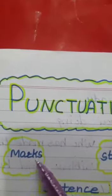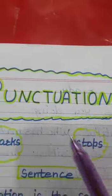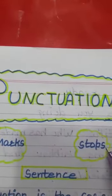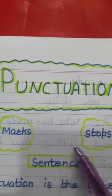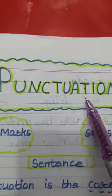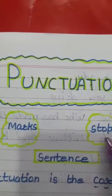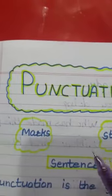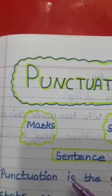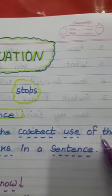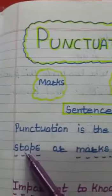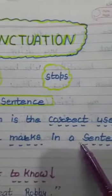What is punctuation? Punctuation is marks or stops. And where do we make use of these marks or stops? We make use of these marks and stops in a sentence. Punctuation is marks or stops in a sentence. Let us go through the definition of punctuation. Punctuation is the correct use of the stops or marks in a sentence.